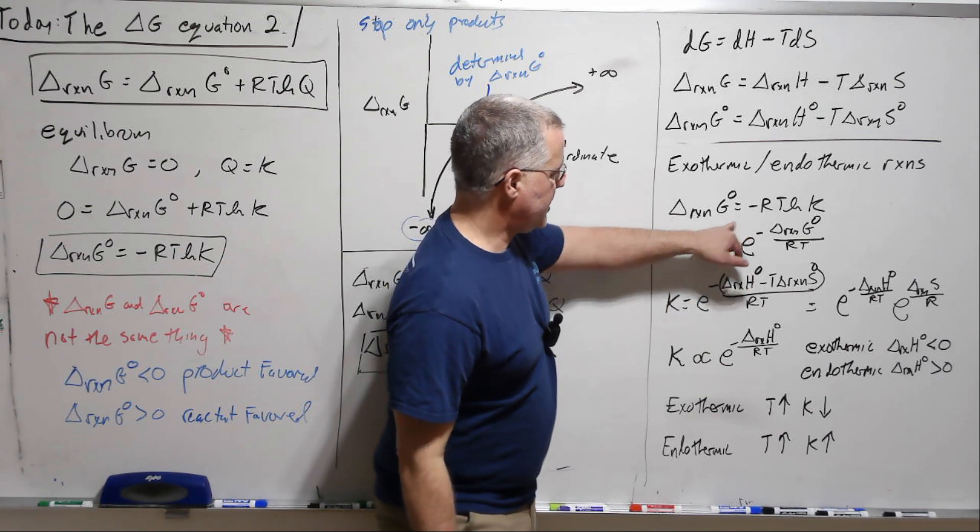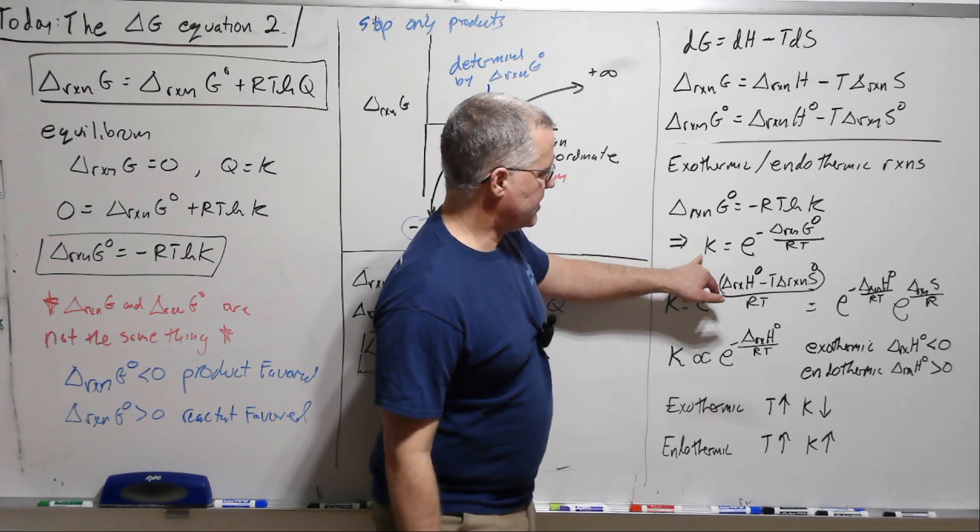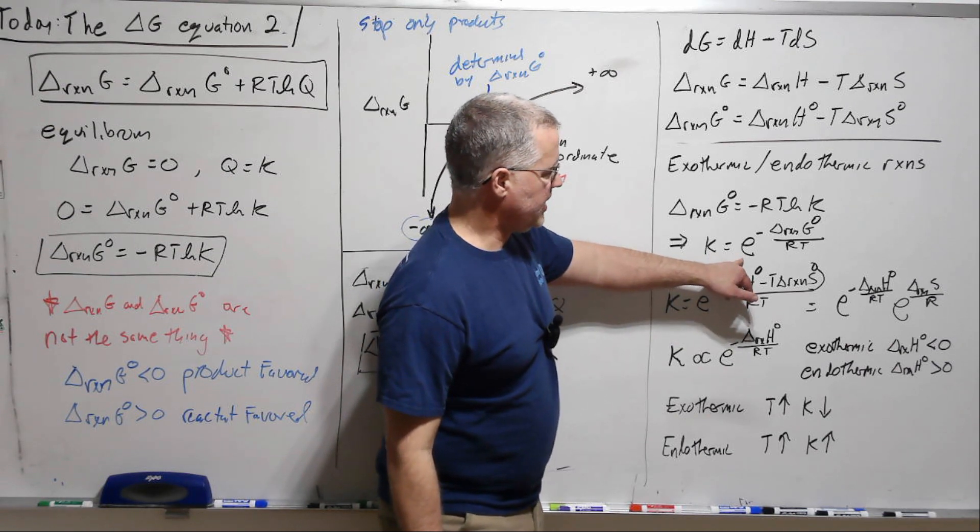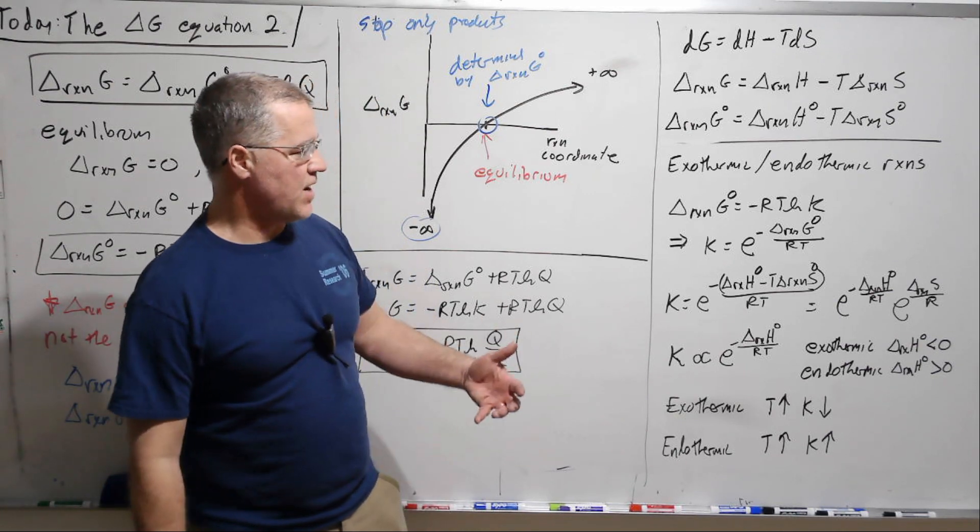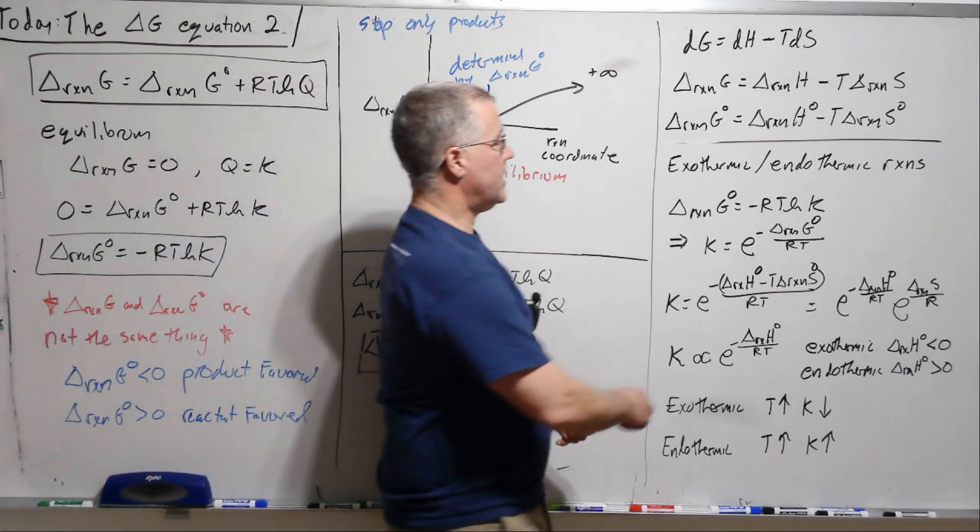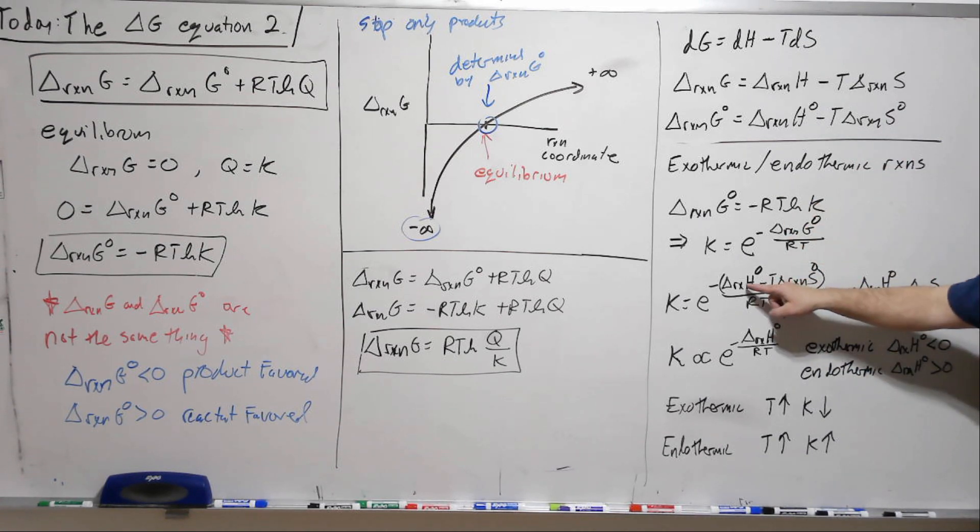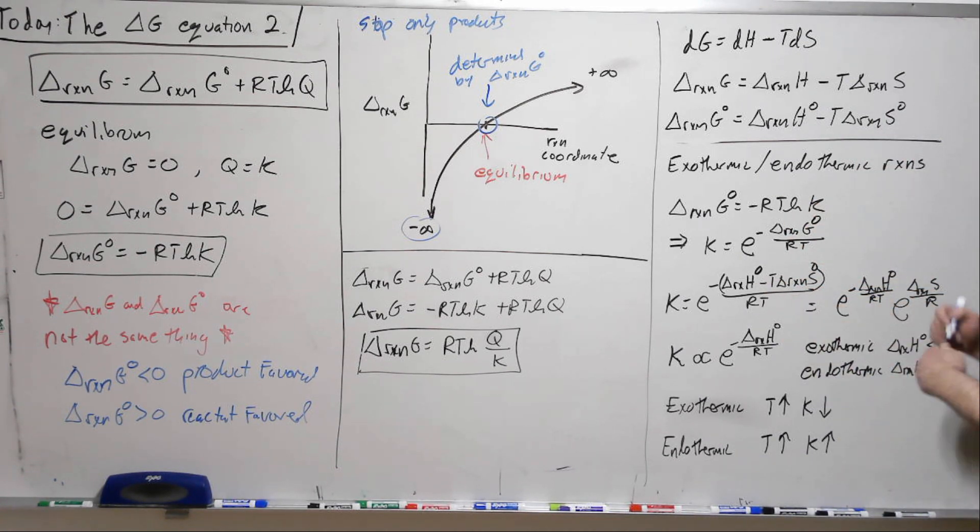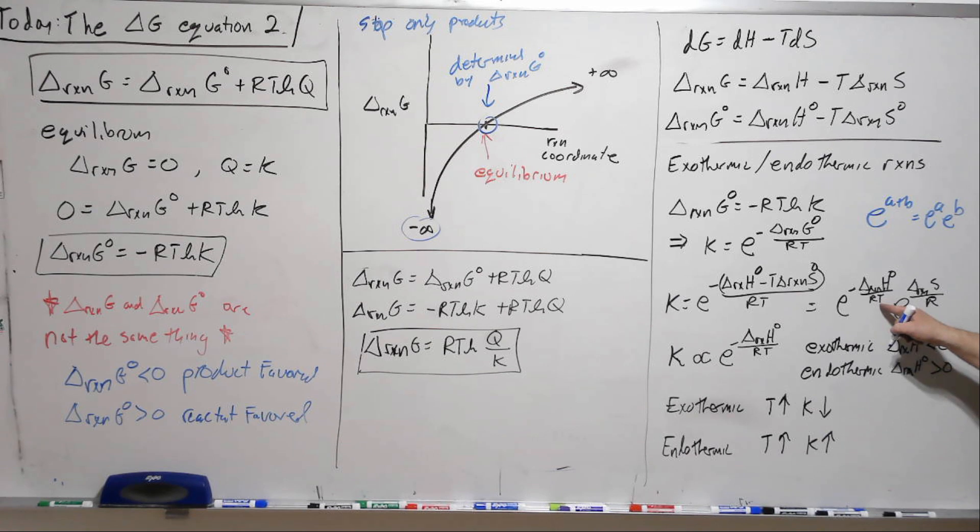So we're going to bring an RT over to this side and then we're going to exponentiate both sides. So that's going to get our K by itself. And then we're going to get E to the minus Delta reaction G standard divided by RT. Now let's plug in this in here for Delta G standard. And now I'm going to use property of exponents that E to the A plus B is E to the A, E to the B.